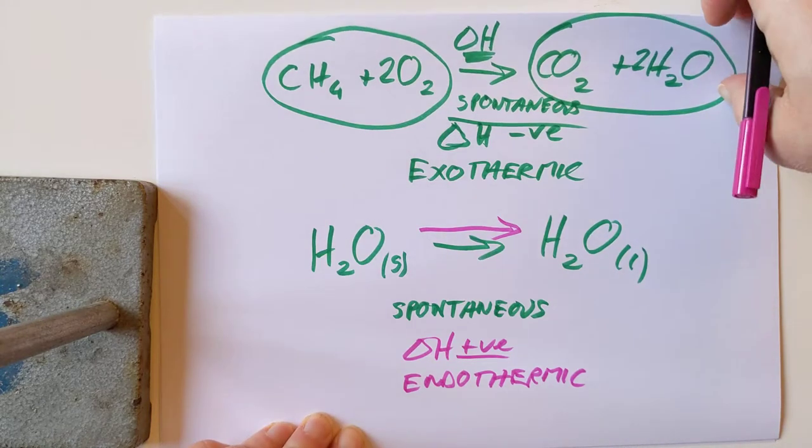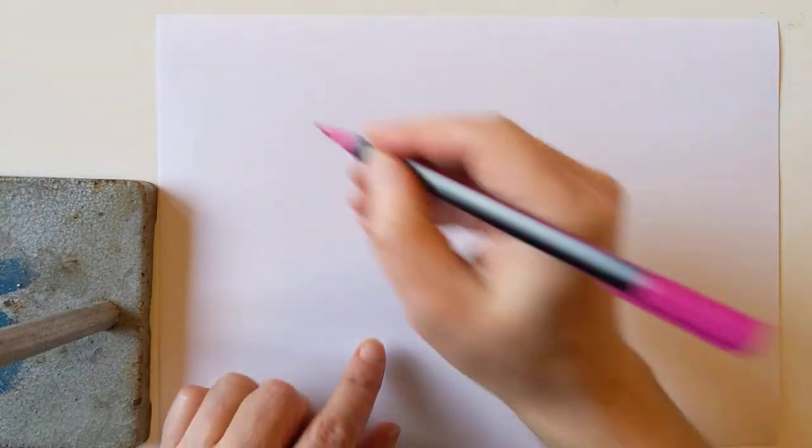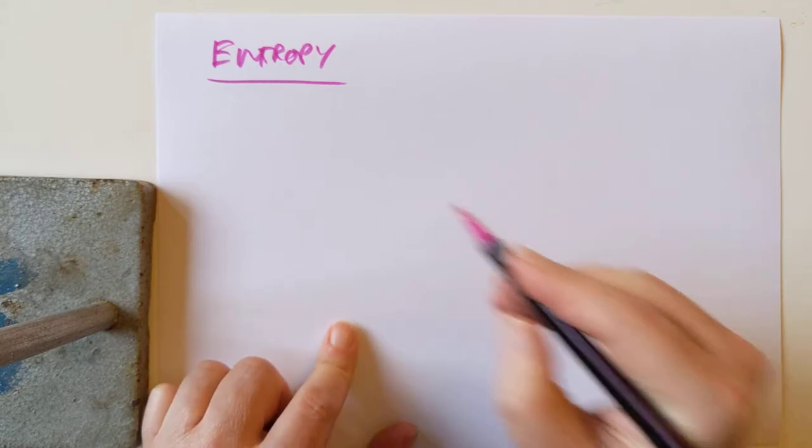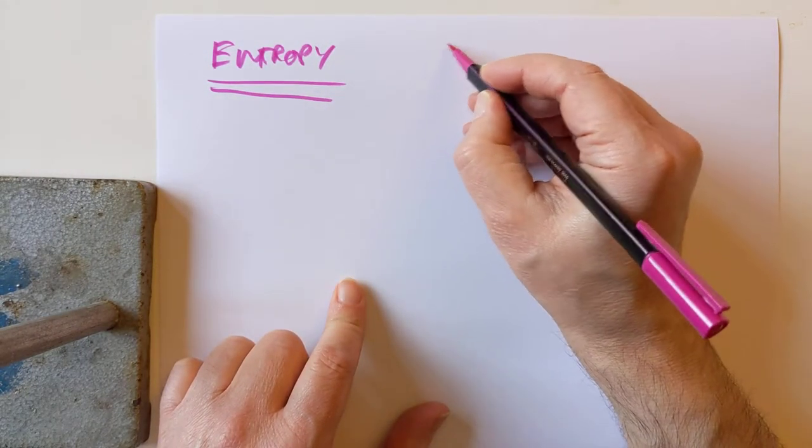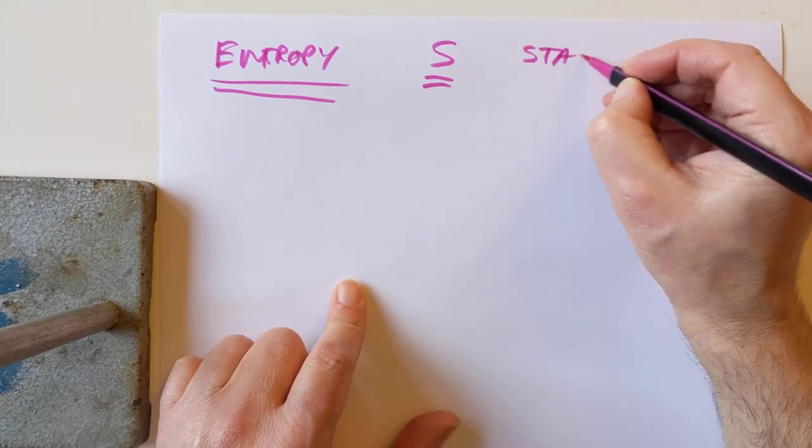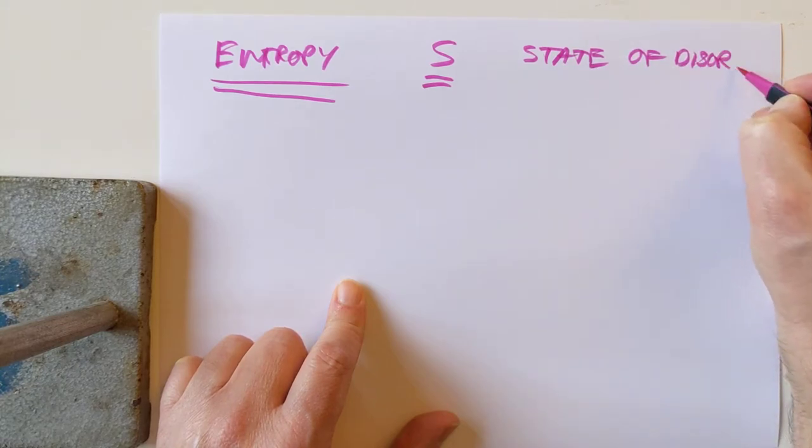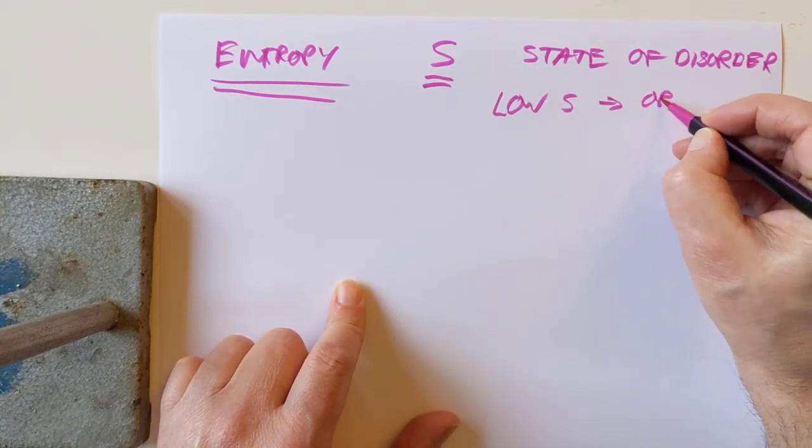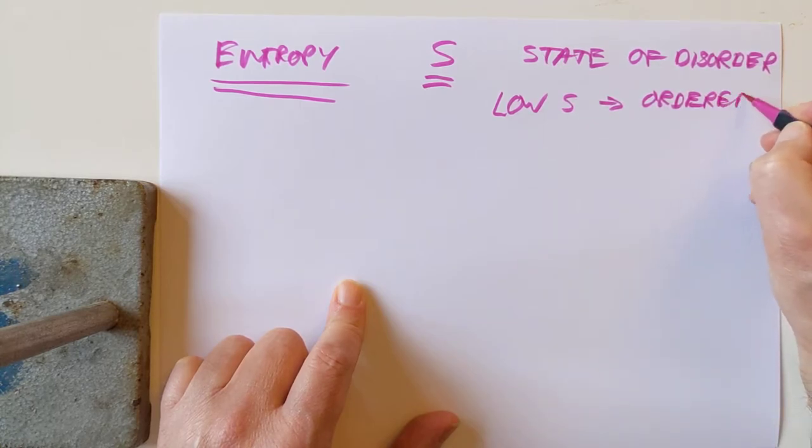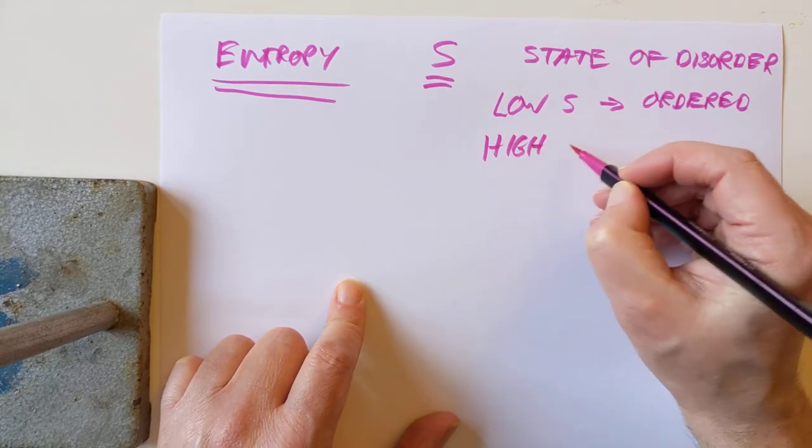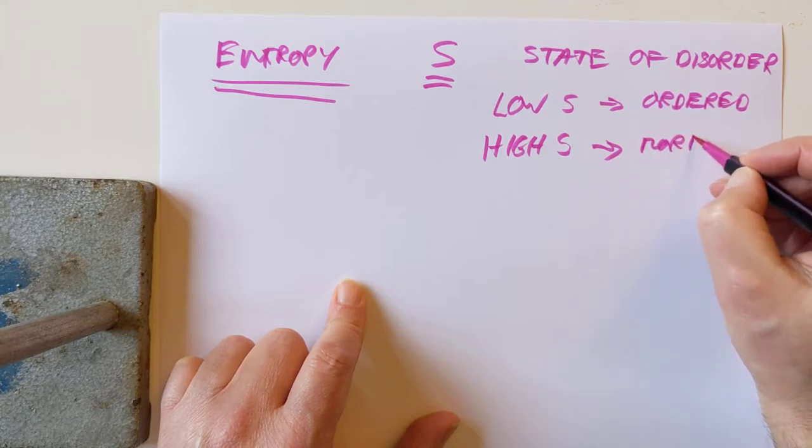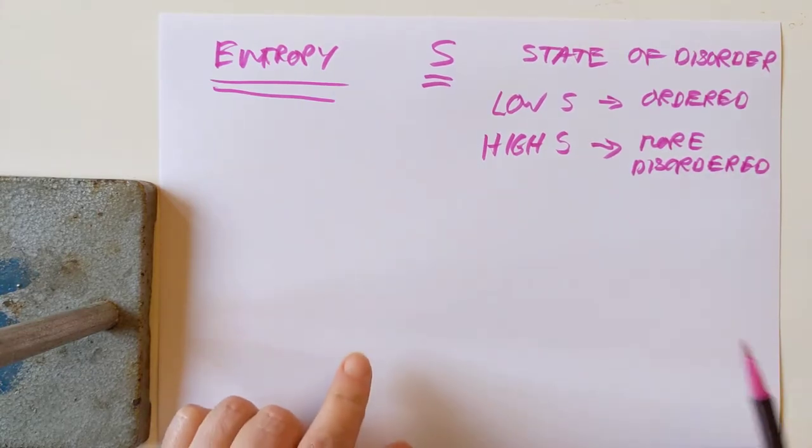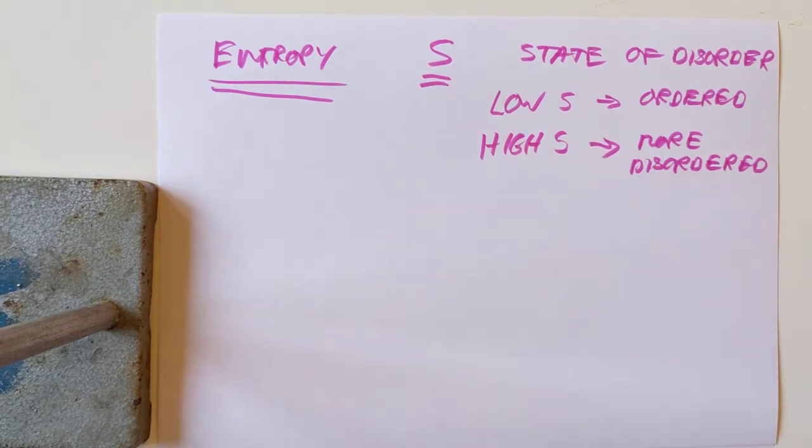Some people just want to watch the world burn. They crave disorder. Entropy, which is given the letter S, is basically the state of disorder of a system.